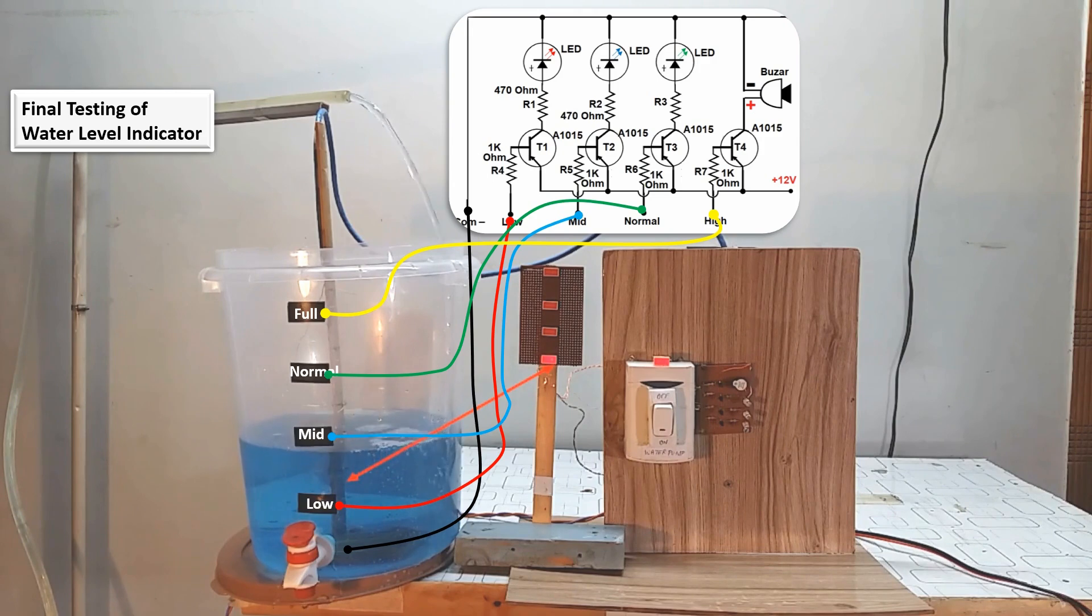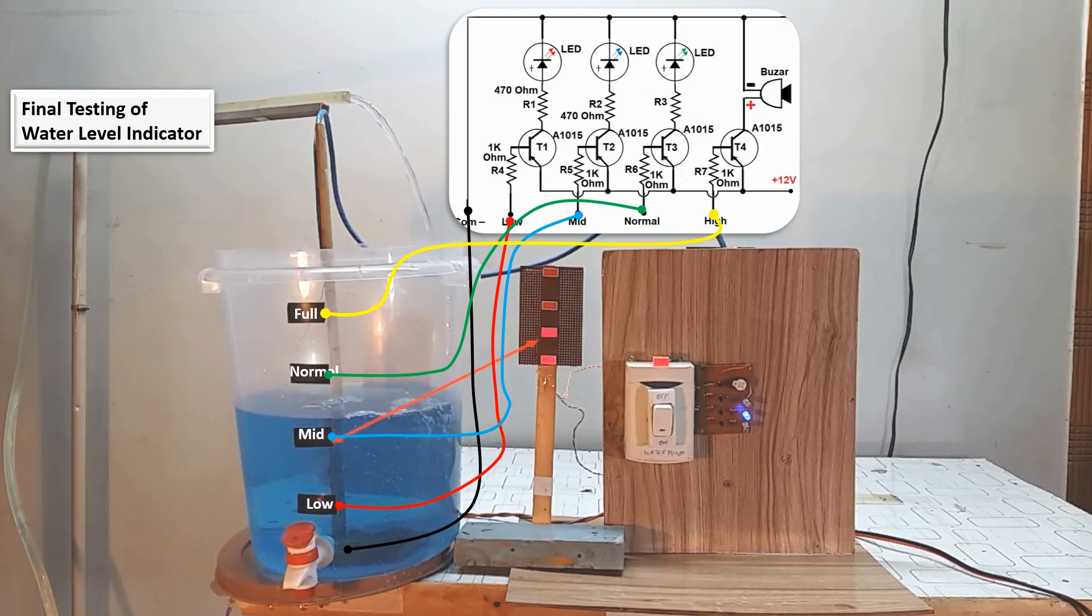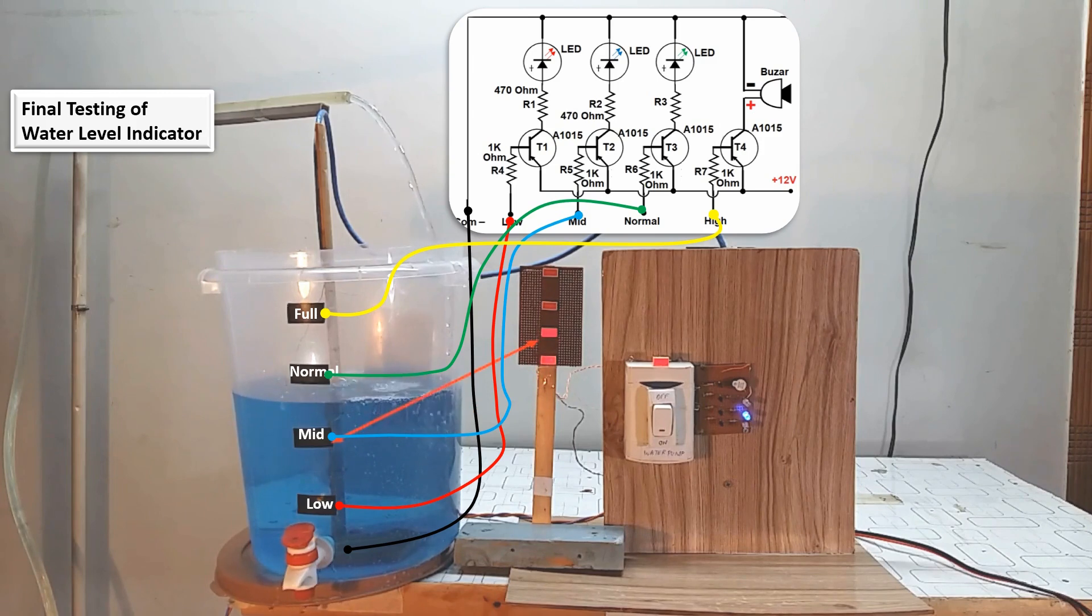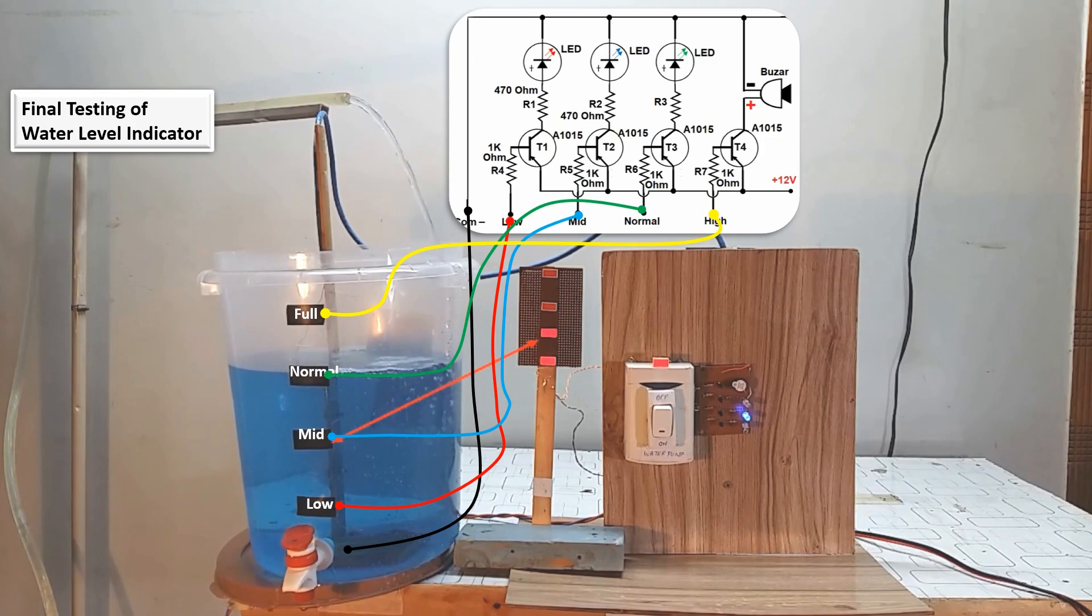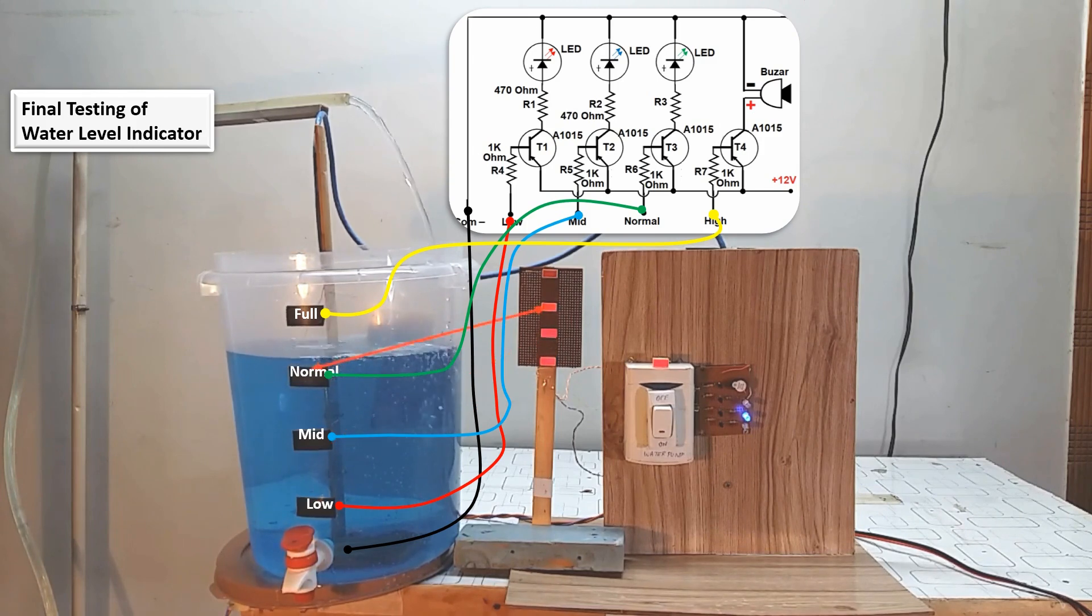When ProB2 and ProB3 come into contact with water, they trigger transistor 2 and transistor 3 to turn on. This activation causes LED2 and LED3 to illuminate, indicating that the water level is at the mid and normal levels, respectively.